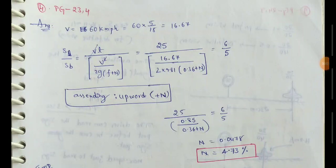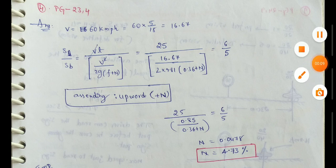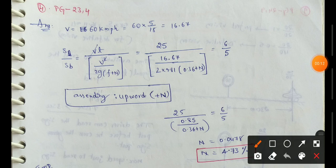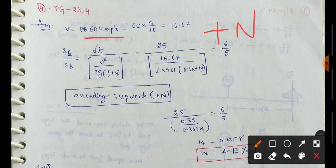In this video, we will discuss a solid example of this problem. A vehicle is moving at 60 km per hour on an ascending gradient — ascending gradient means plus n, upward gradient. A highway vehicle has to come to a stop position to avoid collision with a stationary object.